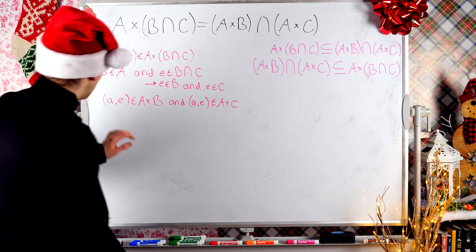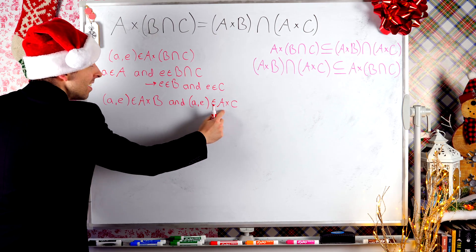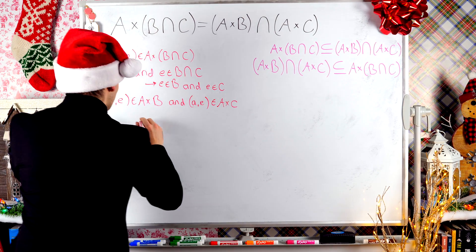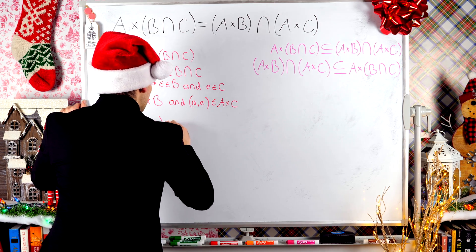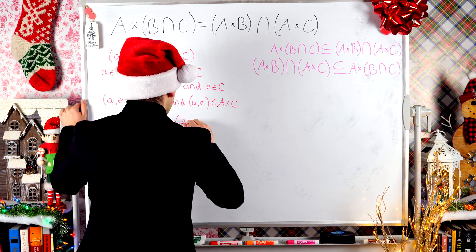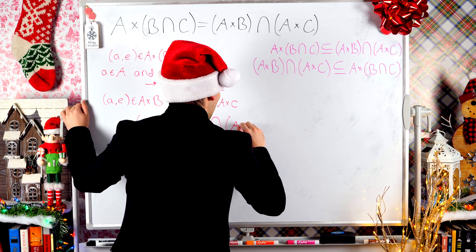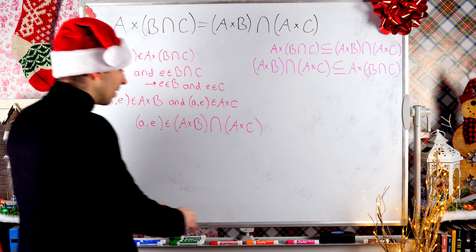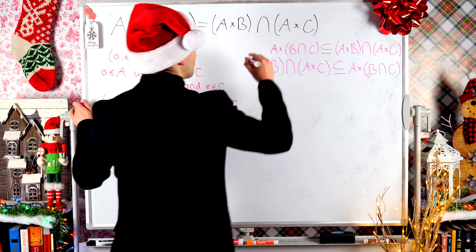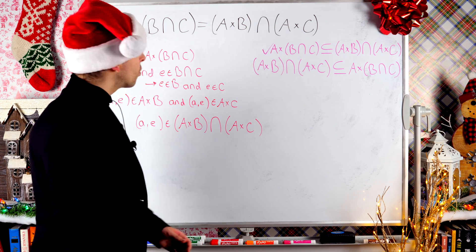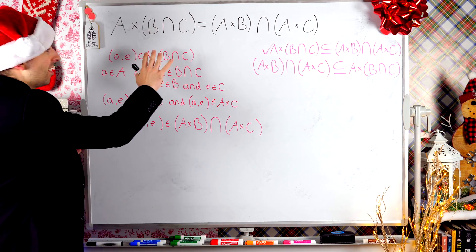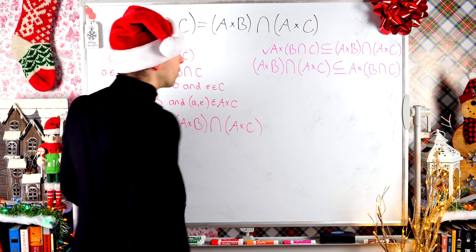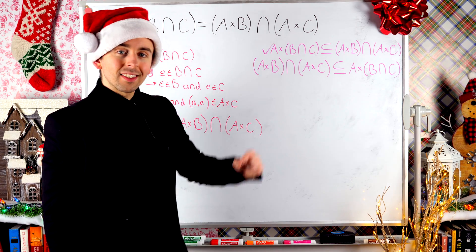We're pretty much there. If this ordered pair is in A cross B and it's in A cross C, then by definition it's an element of the intersection of the Cartesian products. So the ordered pair (a, e) is an element of A cross B intersected with A cross C, because it's an element of both of those sets. We've established this first subset relation — we're halfway there. We took an element from A cross B intersect C and repeatedly applied definitions to show it's also an element of A cross B intersect A cross C.